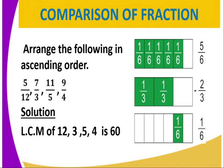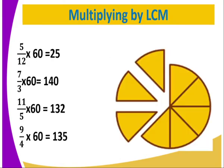And we are going now to compare a given set of fractions, whereby we are required to arrange the following in ascending order. We are being given 5 over 12, 7 over 3, 11 over 5, and also 9 over 4. So for the solution, we must get the LCM, or the least common multiple of all the denominators. And in our case, our denominators are 12, 3, 5, and 4. So the LCM is 60.